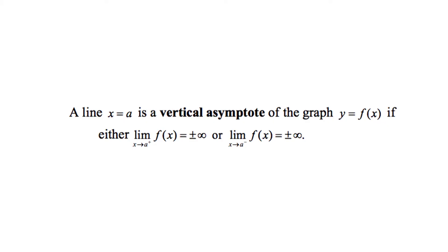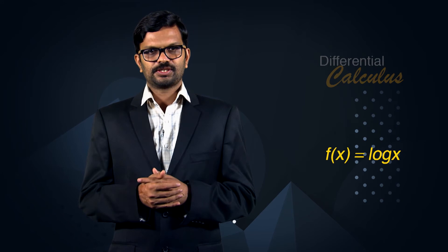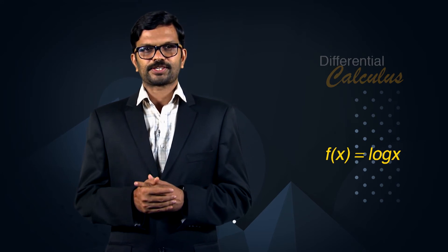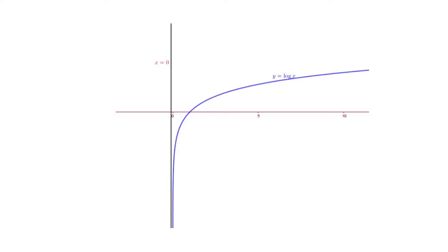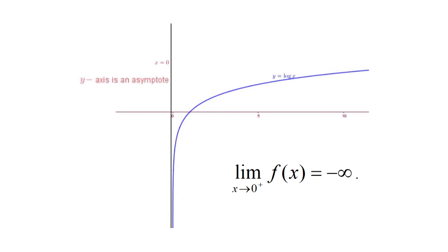A line x = a is a vertical asymptote of the graph y = f(x) if either lim(x→a⁺) f(x) = ±∞ or lim(x→a⁻) f(x) = ±∞. For example, consider f(x) = log x, defined for positive values of x. We have log x → −∞ as x → 0⁺, that is lim(x→0⁺) f(x) = −∞. Thus x = 0 is a vertical asymptote to y = log x.